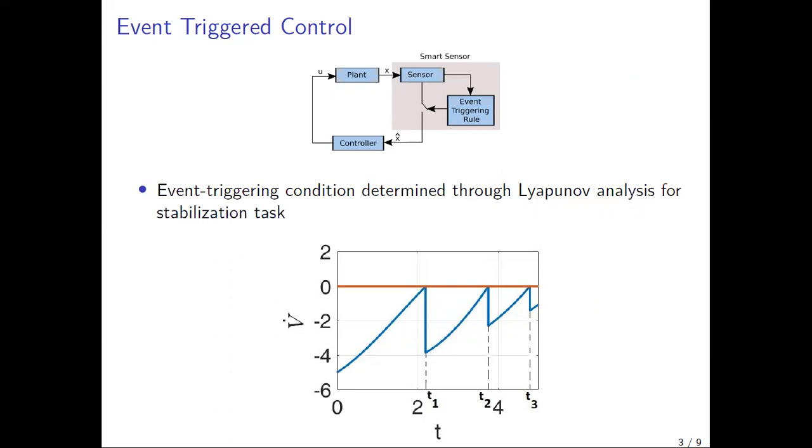In the literature of event-triggered control, usually the event-triggering rule is designed in such a way that the closed-loop system is stable. For example, you may be familiar with Lyapunov stability theorem, which states that if there exists a Lyapunov function with negative time derivative along the trajectories of the system, then the origin of the system is asymptotically stable.